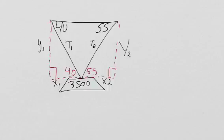So we're going to use right triangle trigonometry. Using sine and cosine, if we use sine of 40, that's equal to the opposite side, Y1 over the hypotenuse, T1. So that's equal to Y1 over T1.